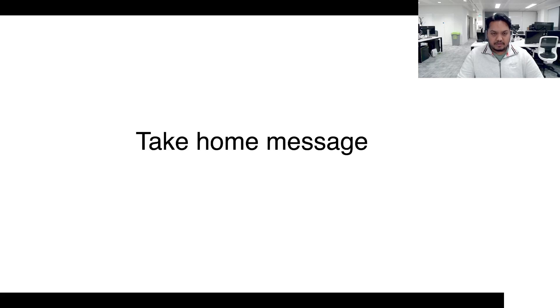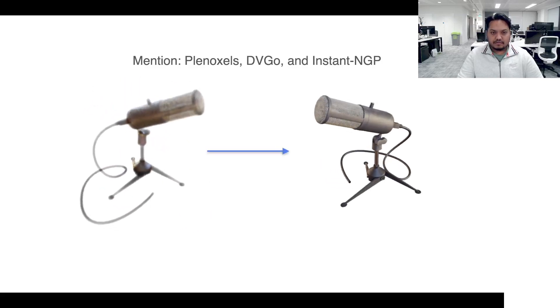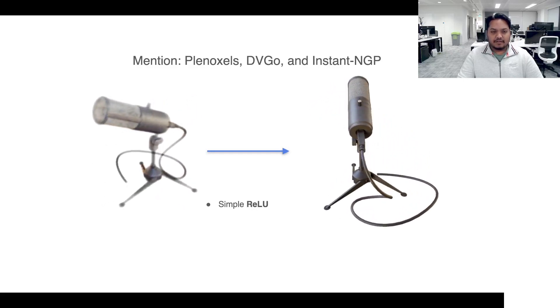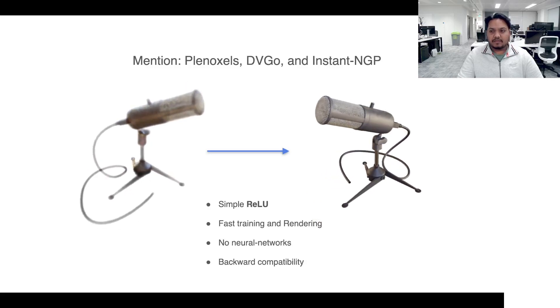To provide the main summary of our work, we describe the following. Firstly, a huge shout out to the cool concurrent works of Plenoxel, DirectVoxelGo and Instant NGP. But what we convey through our work is that in order to go from a quality like this to a quality like this, all you need is a humble little ReLU. And you get speed, simplicity and backward compatibility for free.